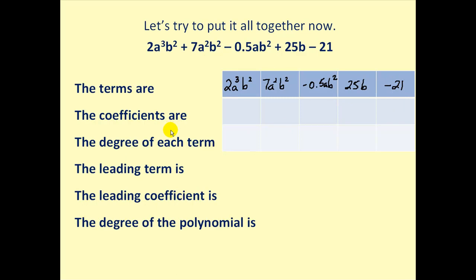Remember, the coefficients are the constant factors of the term or the number part. So this coefficient is two, this coefficient is seven, this coefficient is negative 0.5, 25, and negative 21.